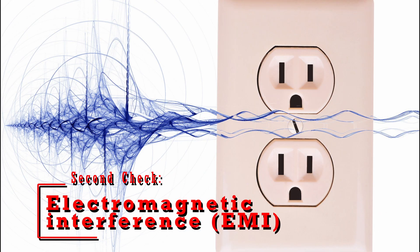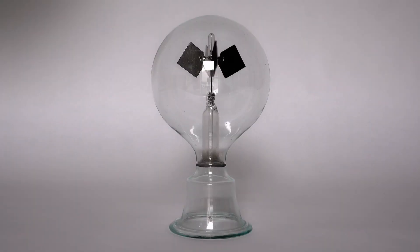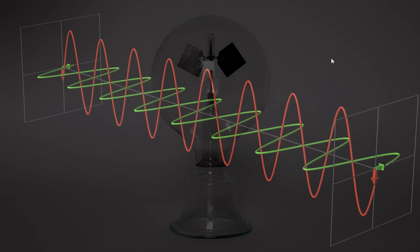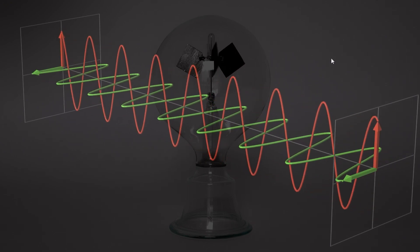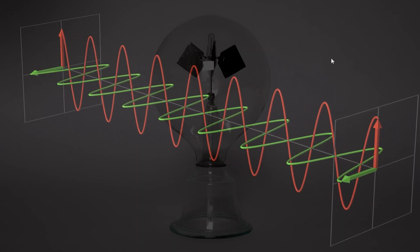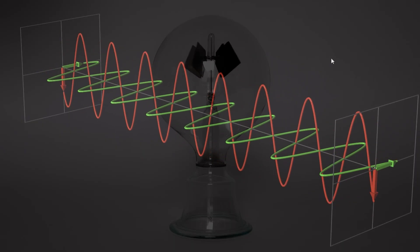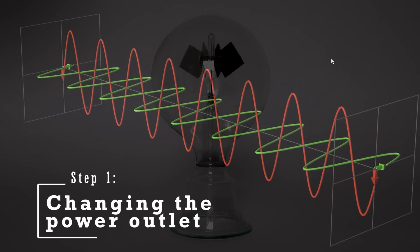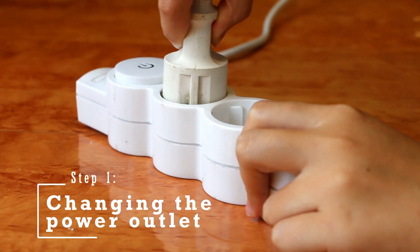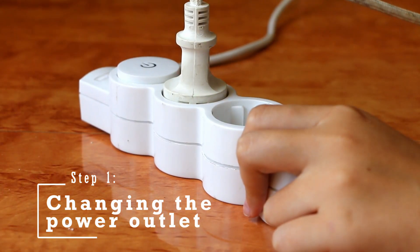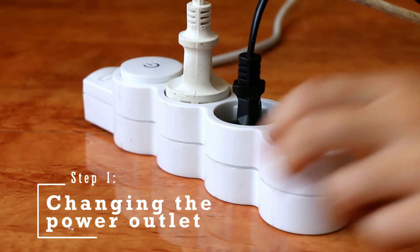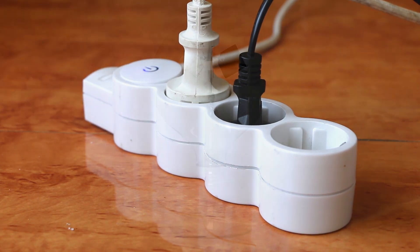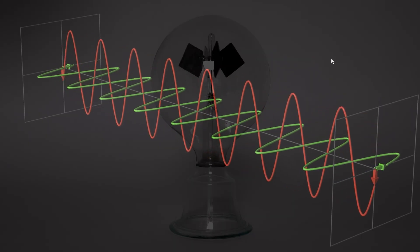Next we should check for the possibility of EMI, which is electromagnetic interference. EMI can originate from various electronic devices including computers and printers, and they have the potential to affect any electronic circuit. Sometimes EMI can even travel through power lines, causing unexpected issues. To troubleshoot EMI-related problems, consider Step 1: changing the power outlet. Begin by relocating your computer to a different wall outlet or an entirely separate circuit. This simple move can help identify whether the power outlet itself is the source of the problem, and has proven effective in resolving EMI issues for some users.